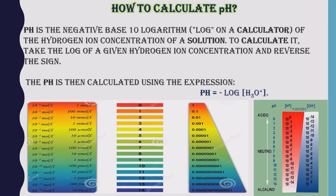How to calculate pH. pH is the negative base-10 logarithm of the hydrogen ion concentration of a solution. The hydrogen ions are not stable and they tend to combine with water molecules to form hydronium ions, which has the formula H₃O⁺. To calculate pH, take the log of a given hydrogen ion concentration and reverse the sign. Overall, the expression is: pH = −log₁₀[H⁺].